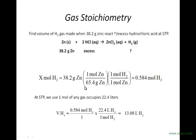Multiply the top across, divide by the bottom, and we get 0.584 moles of hydrogen gas being produced.